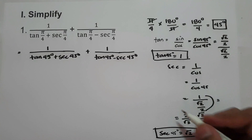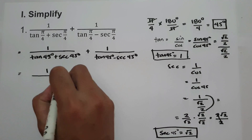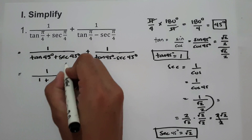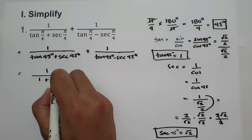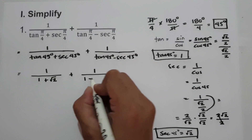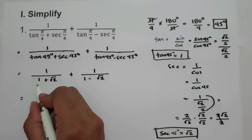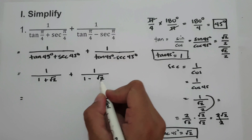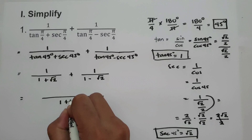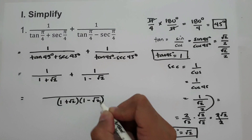Now let us substitute into our equation. We have 1 over tangent(45°) — that is 1 — plus secant(45°), that is √2, plus 1 over tangent(45°) — that is 1 — minus √2. Our denominator will be (1 + √2) multiplied by (1 − √2).